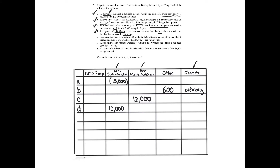Transaction E: a silo used in business was involuntarily burned on December 6th, resulting in a $1,000 recognized loss. It was purchased on May 8th of the current year. It can't be capital gain or loss under general rules — it's a capital asset and an involuntary event. For Section 1231, the sub hotspot requires being held more than one year, but May 8th to December 6th is a year or less. Neither the sub hotspot nor the main hotspot qualifies, so the $1,000 loss is ordinary.